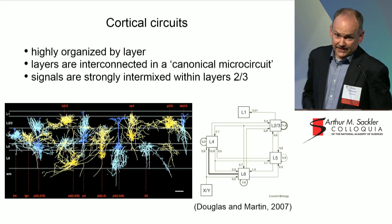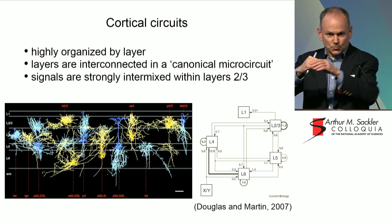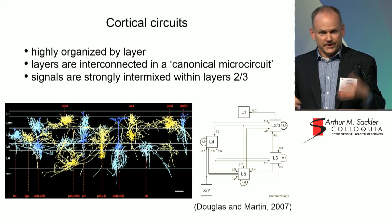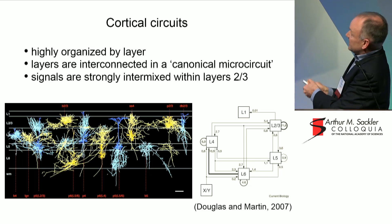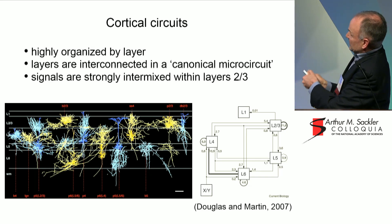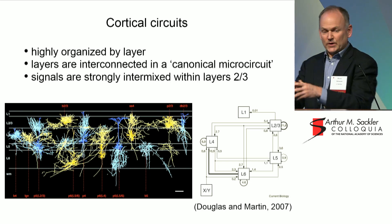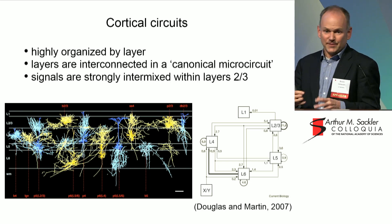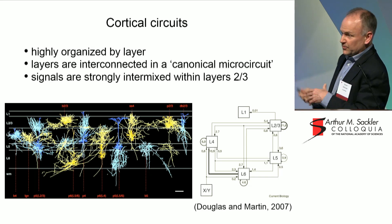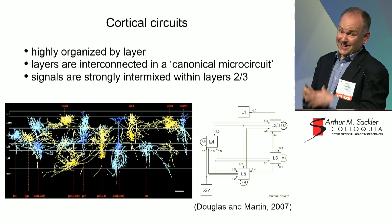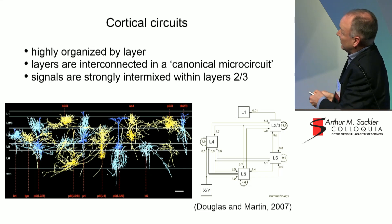Another area is the computational richness of the cortical circuits. Cortex is not just one layer of neurons — it has six layers with a very rich structure. What has emerged is what people call a canonical microcircuit: the elusive idea that maybe there's one canonical algorithm you can use to understand all of cortex. Maybe that's true, but the components of that canonical algorithm are a lot richer than what we're currently using.